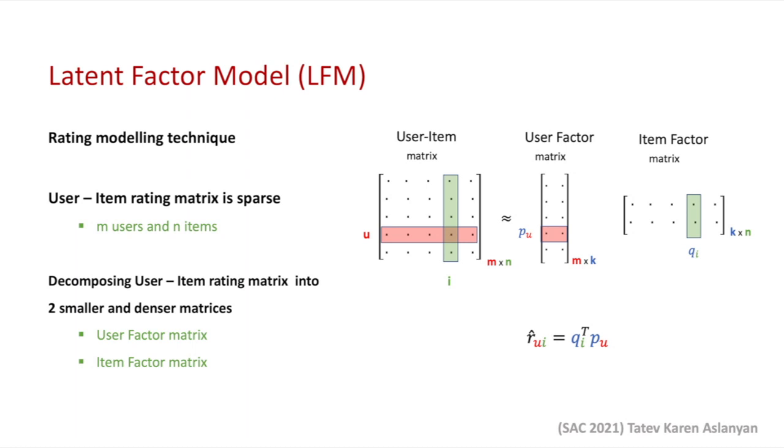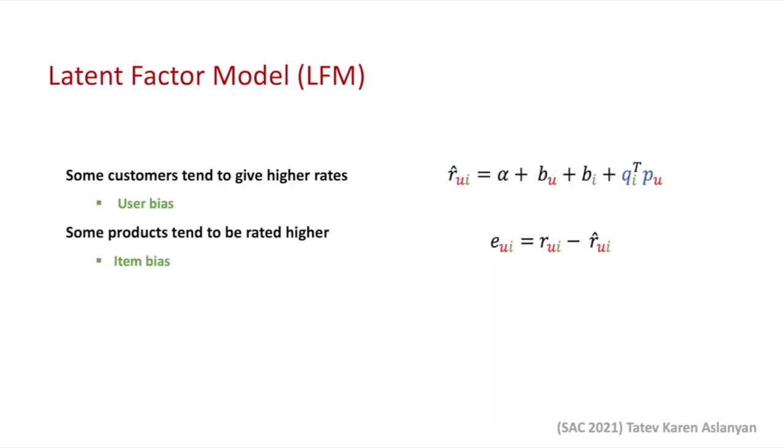So, if we look at a single pair of user and item rating, then according to the LFM model, rating of a user u for item i can be estimated by obtaining the dot product between the p-th vector and the transpose of the q-th vector. But, estimating the rating without taking into account common trends might lead to unreliable prediction results. One of those common trends is that some customers tend to give higher rates to all the products they buy than other customers.